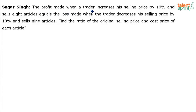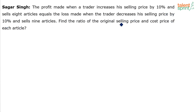The profit made when a trader increases his selling price by 10% and sells 8 articles equals the loss made when the trader decreases his selling price by 10% and sells 9 articles. Find the ratio of the original selling price and the cost price of each article.